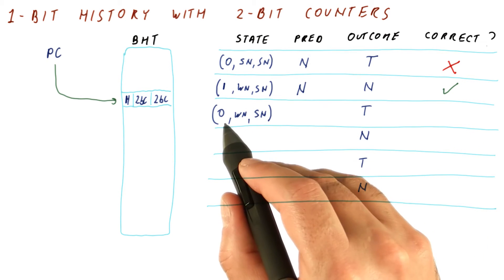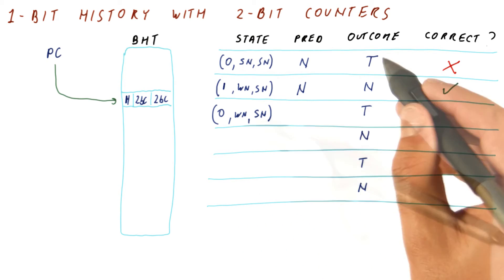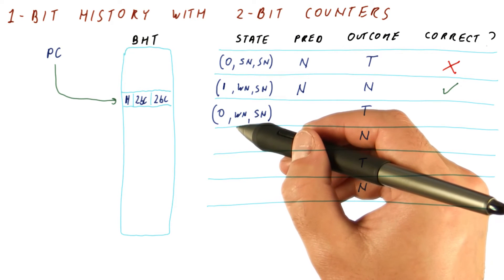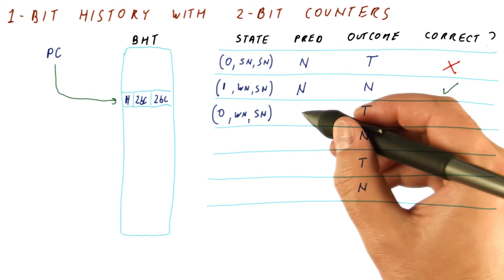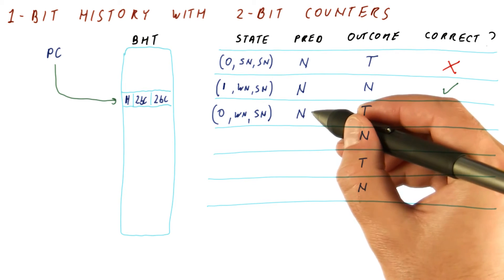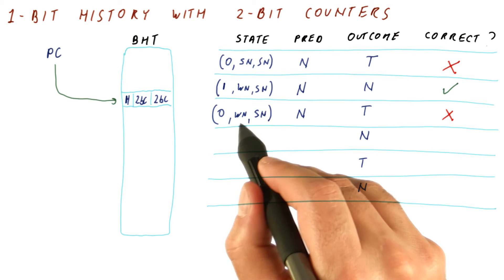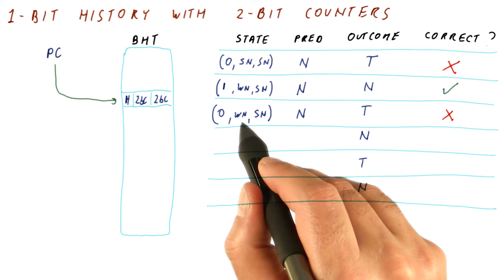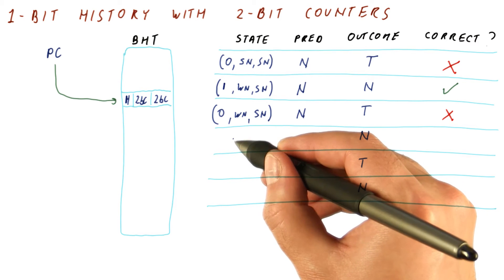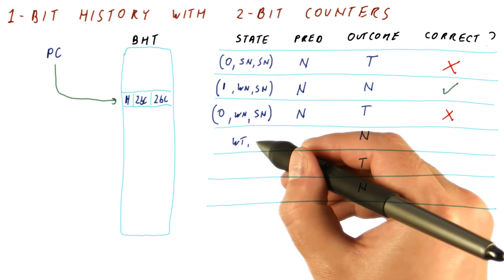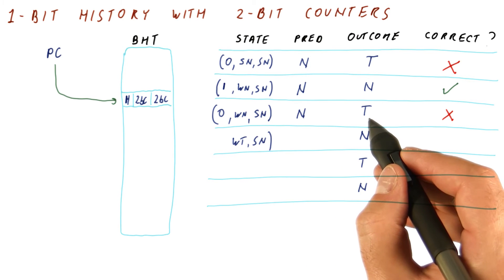So now we have the state of zero, weak not taken, strong not taken to predict the next outcome. Our prediction indexes into the array of counters and gets the first one. Weak not taken means we still predict not taken. We are wrong. We update the predictor by finding the counter that corresponds to the history — zero means we use this one. We update it using the outcome. From weak not taken, we go to weak taken. The other counter stays the same, and the history shifts in one for taken.